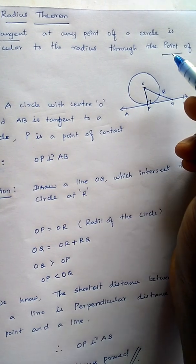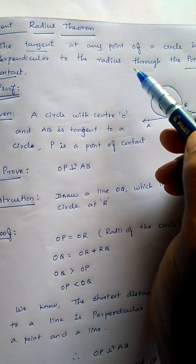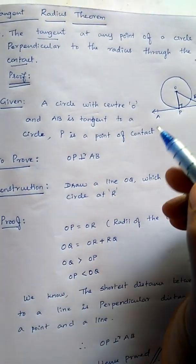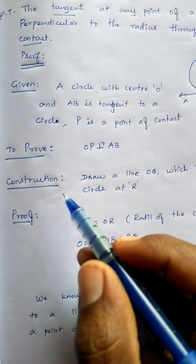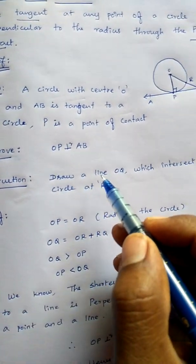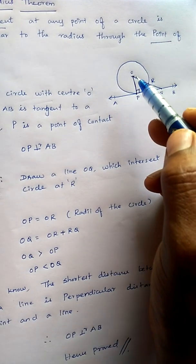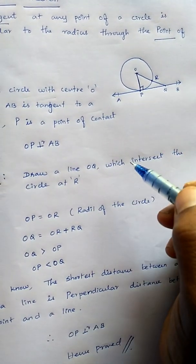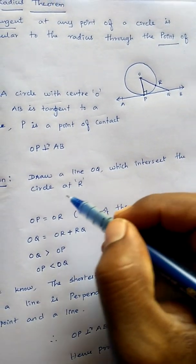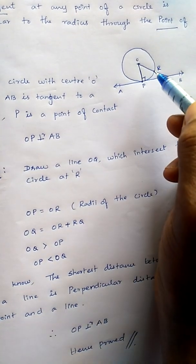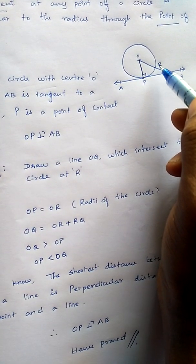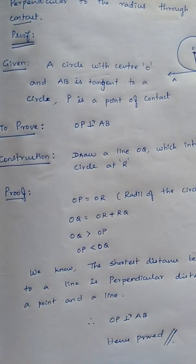For the proof, we are using construction. Draw a line from O to Q which intersects the circle at R. The line will intersect at point R. Now let's go for the proof.